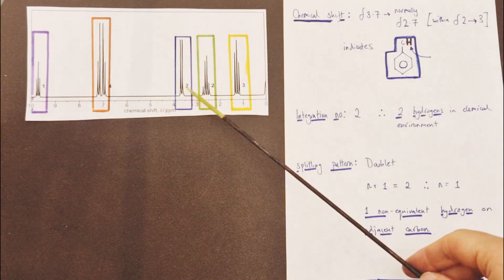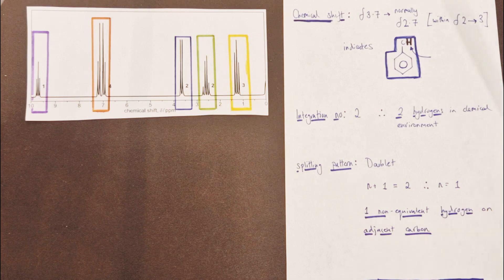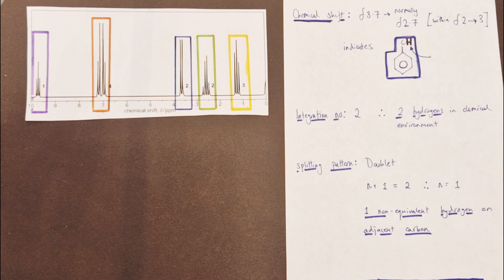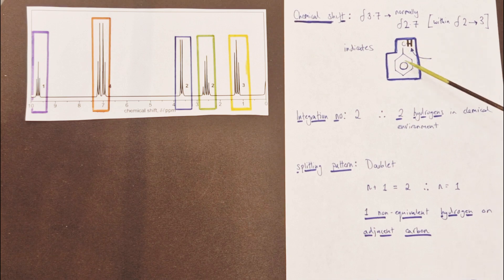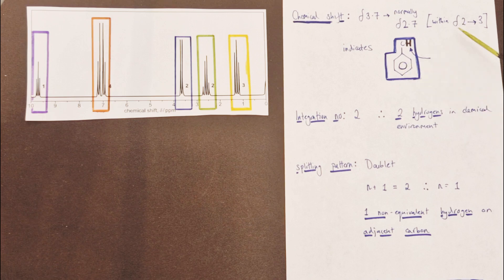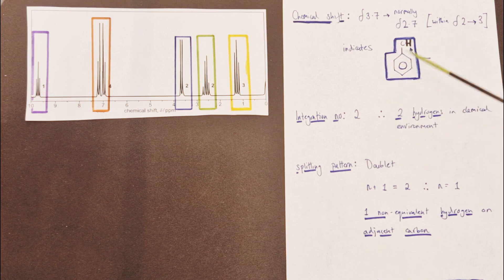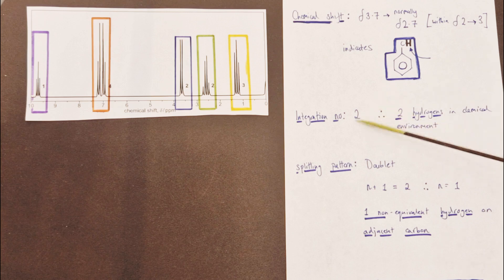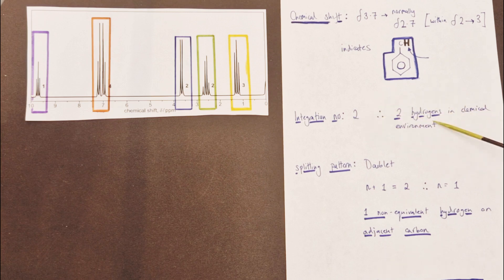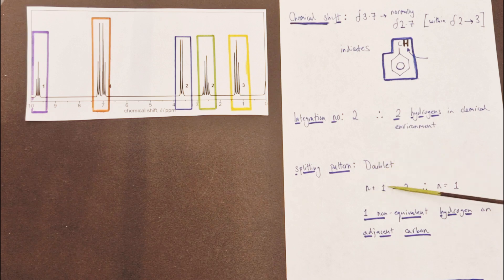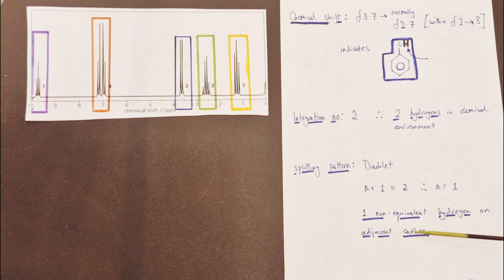Now let's look at this blue set of peaks — a doublet with integration number 2. The chemical shift is 3.7, but the question states it should normally be at 2.7. Assuming 2.7, that's within 2 to 3 parts per million — indicating hydrogen atoms attached to a carbon directly bonded to a benzene ring. The integration number is 2, meaning two hydrogens in this environment. The splitting pattern is a doublet, so applying the N+1 rule: N+1 equals 2, N equals 1 — there is only one non-equivalent hydrogen on the adjacent carbon atom.